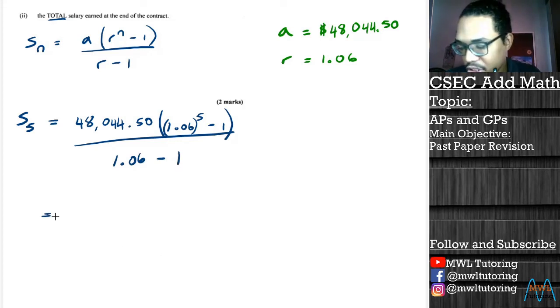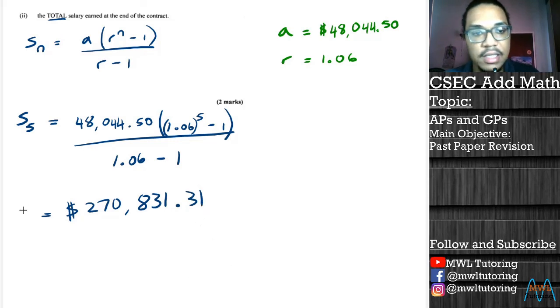And again, now we just take our time and punch this into the calculator and we should have our answer. There you go, I have my answer. I have $270,831.31. This is the sum of all the money he has been paid over the five-year contract. That brings an end to this question here.